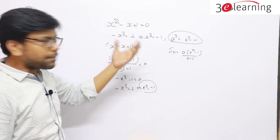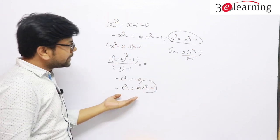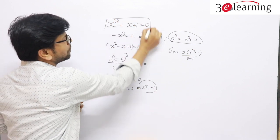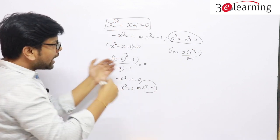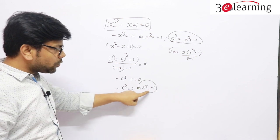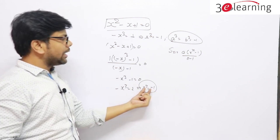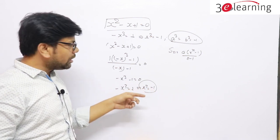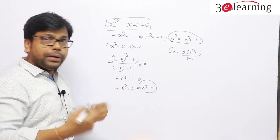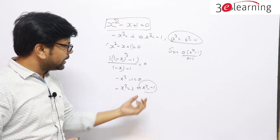Whether you memorize it, use the (x+1) multiplication trick, or derive it using the GP approach — the key result is x³ = -1. This is called the cube root of -1, and both expressions mean the same thing.